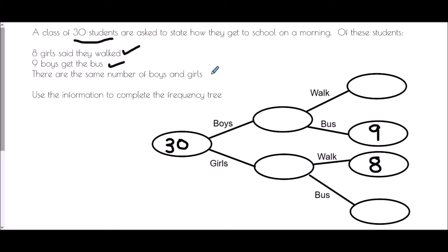The last part says there are the same number of boys and girls. Well, that tells me that if there were 30 students, if I half that, I'll have the same number of boys and girls. So half of 30 is 15. Now, the issue here is we've got these two blank bubbles, but they aren't blank for very long because if there were 15 boys and nine took the bus, then that means that the rest of them must have walked. And so the remaining students who are boys will have walked, which is six.